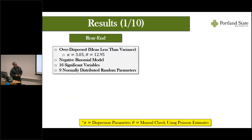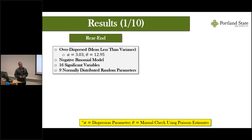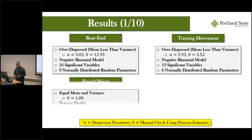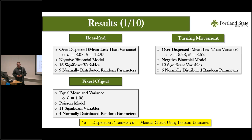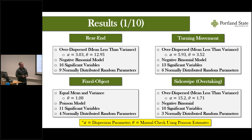For the results: the rear-end crash data set was over-dispersed, so a negative binomial model was used. Sixteen variables were found to affect crash frequency, nine of which had random parameters — meaning heterogeneous effects, positive for some observations and negative for others. Turning movement crashes were also over-dispersed; 13 variables affected crash frequency, six with random parameters. The fixed object data set surprisingly met the assumptions of the Poisson model — which is very rare with crash frequency distributions — with 11 significant variables, four with random parameters. Sideswipe crashes were also over-dispersed, with 10 significant variables and three random parameters.